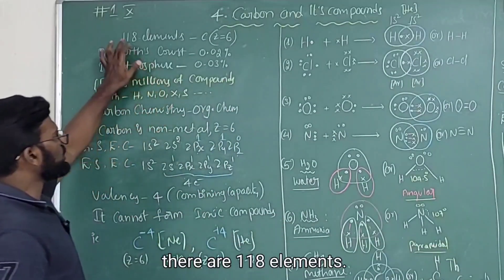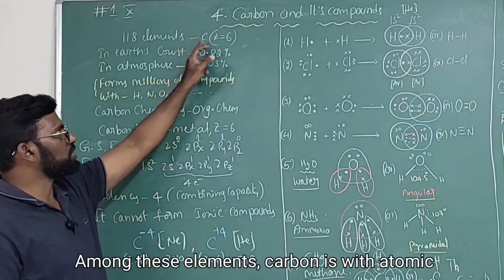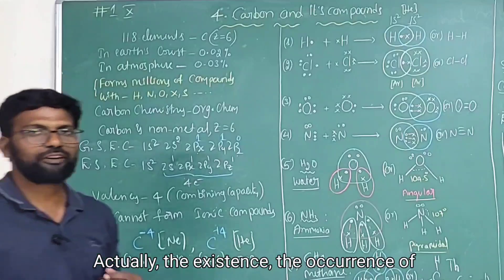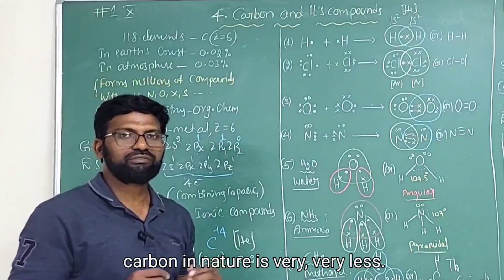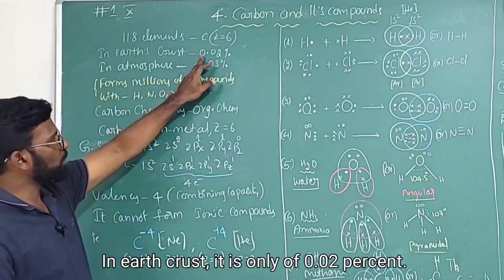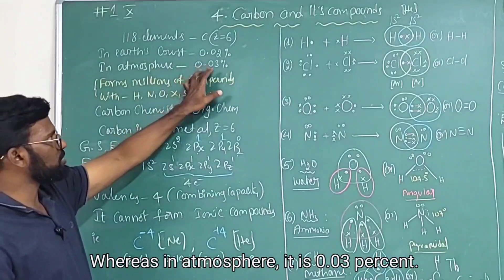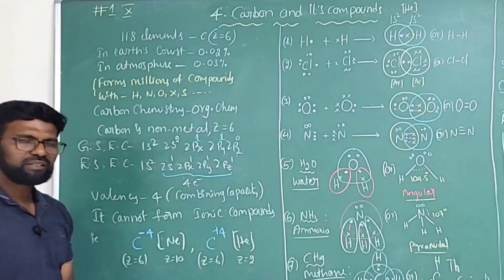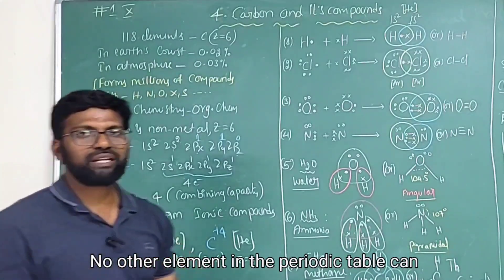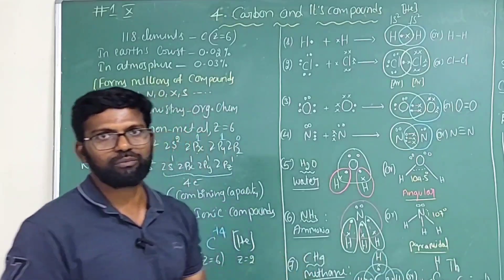In the periodic table there are 118 elements. Among these elements, carbon has atomic number 6. The occurrence of carbon in nature is very less — in the earth's crust it is only 0.02 percent, whereas in the atmosphere it is 0.03 percent. Yet carbon is more powerful; no other element in the periodic table can form as many compounds as carbon forms.